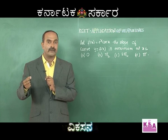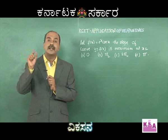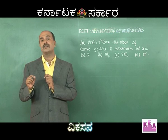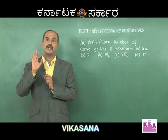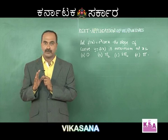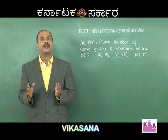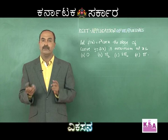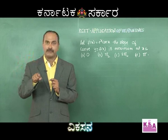If f''(x) is positive, then there exists a minima when x = 0. If f''(x) is negative, then there exists a maximum when x = 0. This is a familiar concept to you. But here you are asked to find out maximum slope.